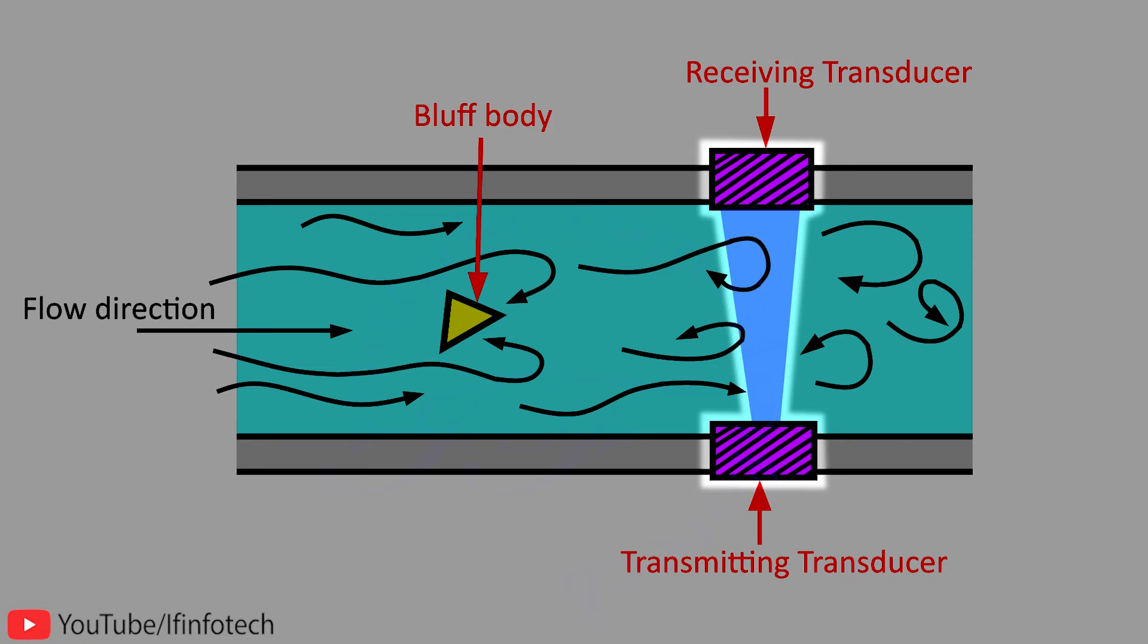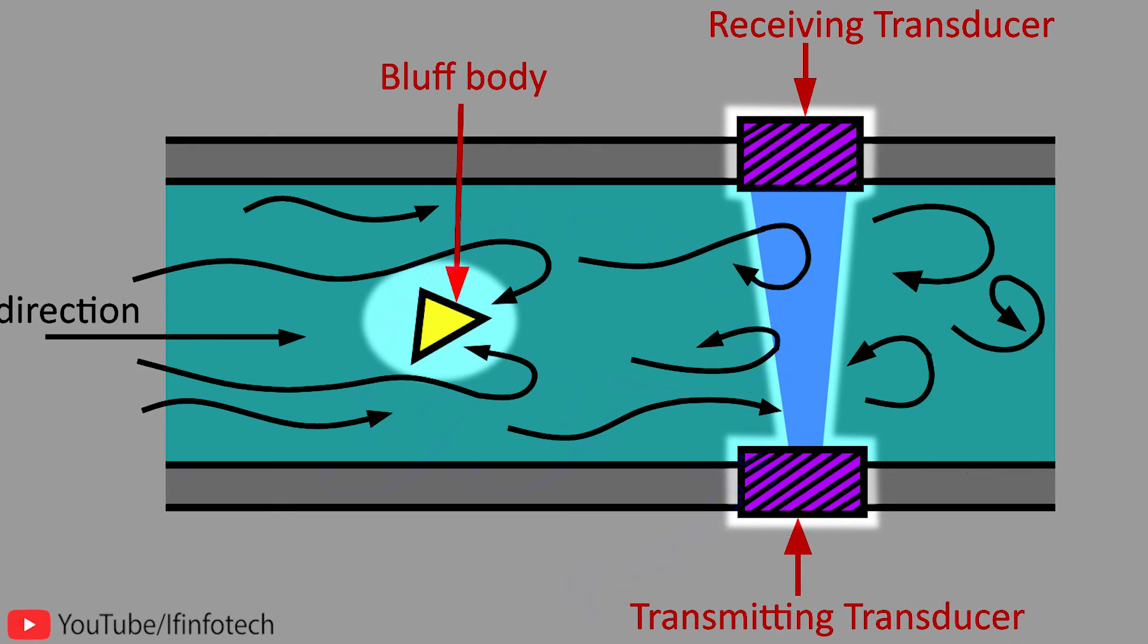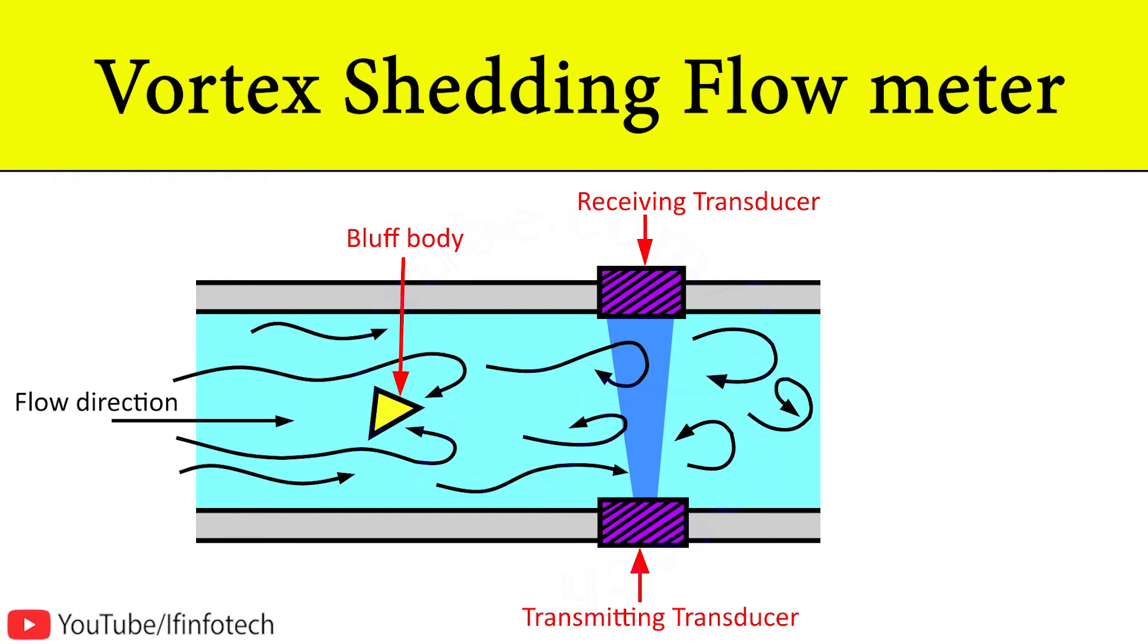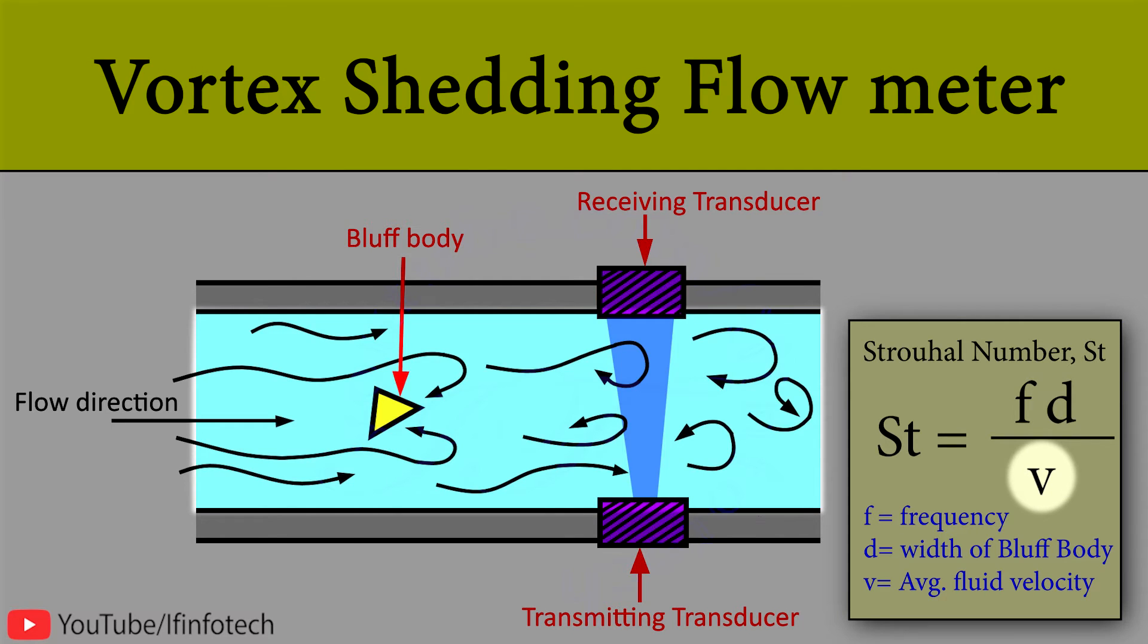Here, average fluid velocity is proportional to the frequency of vortex shedding around the width of the bluff body. The proportionality is defined as the Strouhal number, where f is the frequency of vortex shedding, d is the width of the bluff body, and v is the average fluid velocity.